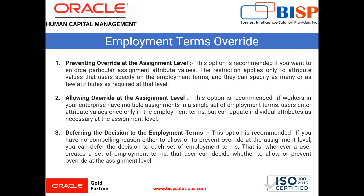The last option is deferring the decision to the employment term. This is recommended if you have no compelling reason either to allow or to prevent override at the assignment level. You can defer the decision to each setup of employment term — that is, whenever a user creates a set of employment terms, that user can decide whether to allow or prevent override at the assignment level. For example, if you set the assignment category to full-time in the employment term, all associated assignments will by default be set to full-time.